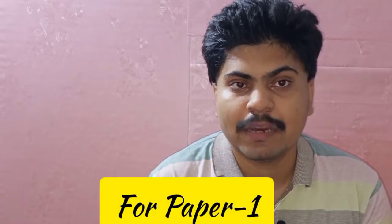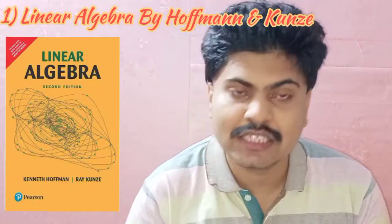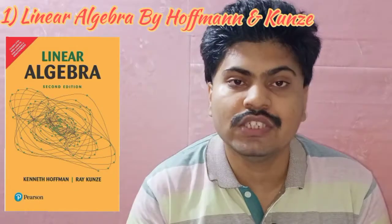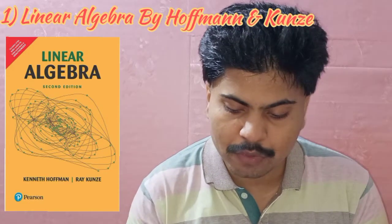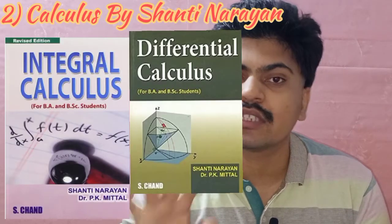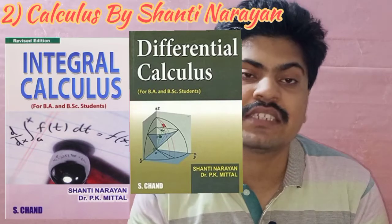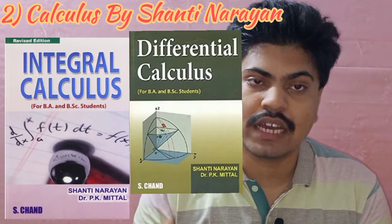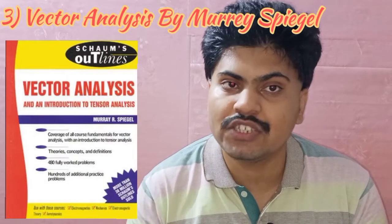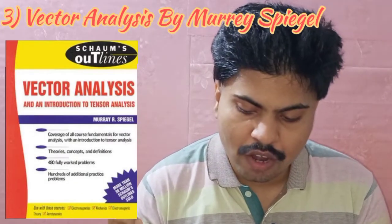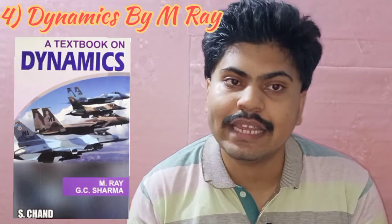First, let's talk about Paper 1. The first book is Linear Algebra by Hoffman and Kunze. The second book is Calculus — two books: Differential Calculus and Integral Calculus by Shanti Narayan. The third book is Vector Analysis by Murray Spiegel, and the fourth book is Dynamics by M. Ray.